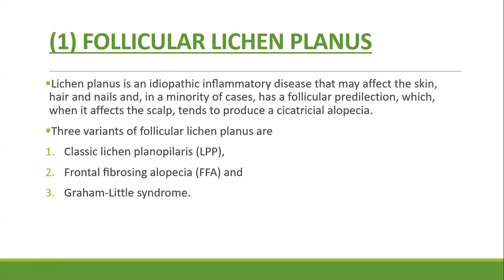Now turning to individual diseases. The first is follicular lichen planus. Lichen planus is an idiopathic inflammatory disease that affects the skin, hair, and nails. In a minority of cases, lichen planus has a follicular predilection, affecting mainly the scalp and tending to produce cicatricial alopecia.